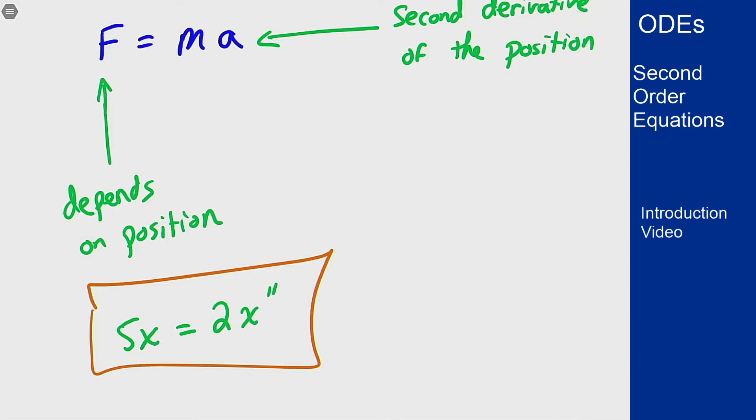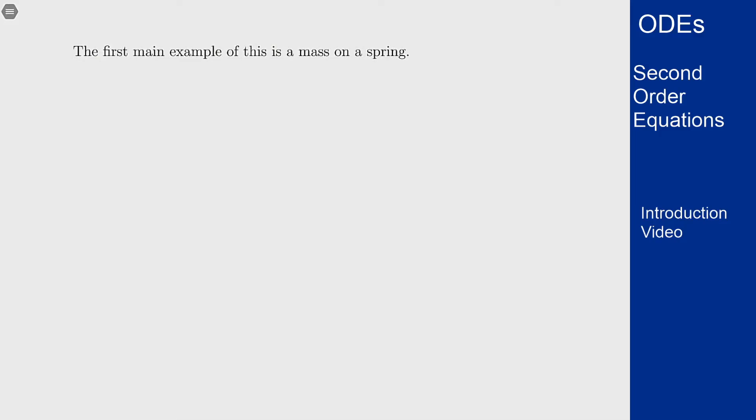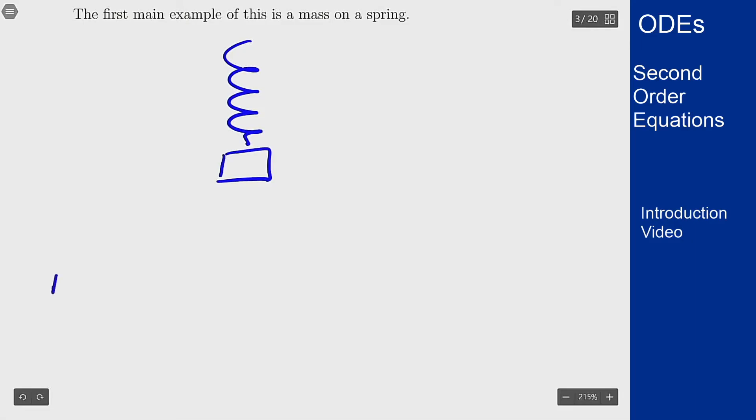And one of the most prevalent ones this comes about is the idea of masses on springs. So if I have an object hanging from a spring, the net force determines the overall acceleration.